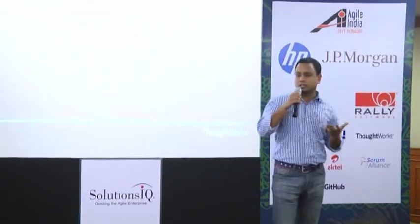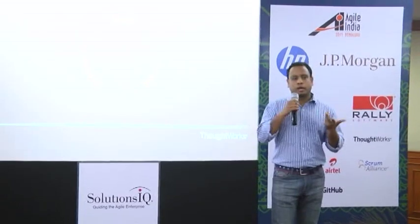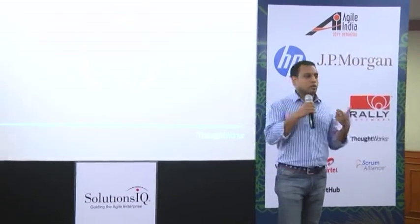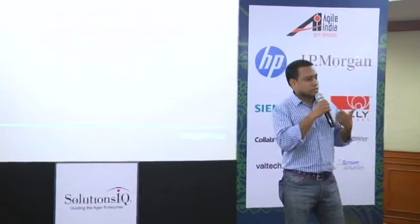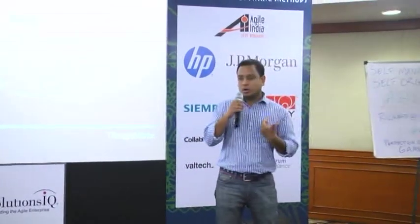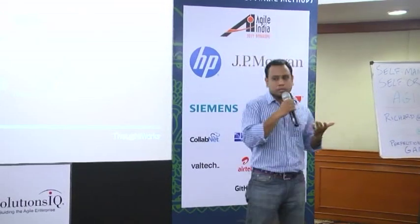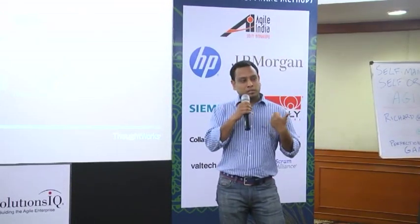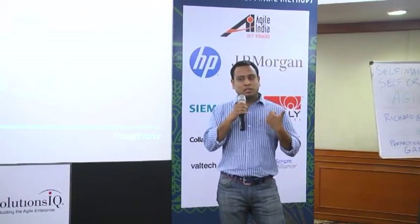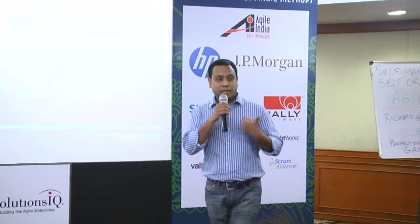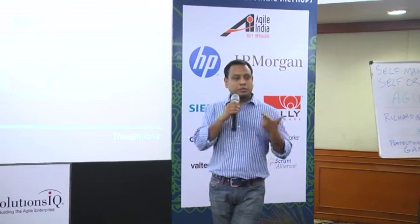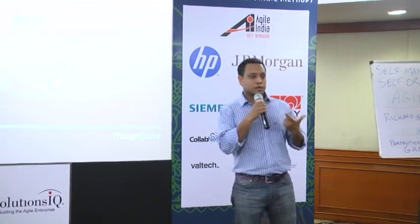I call this the MVP loop. You start with two hypotheses: one, that there is a problem that needs to be solved or an opportunity to be served; and two, that the solution you have is the right solution. You need to check those two first before going ahead and doing anything.